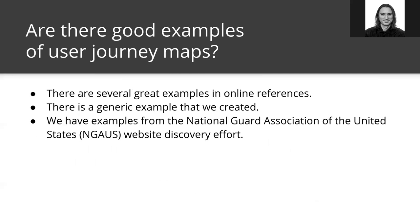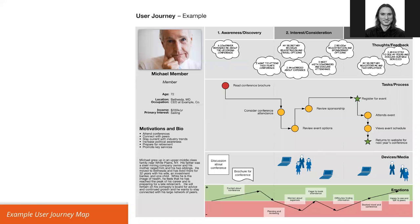There are good examples of user journey maps online. There are several online guides for how these things are constructed. There's a generic example I put together for presentations like this, and the National Guard Association of the United States was kind enough to give us permission to use their information. So here we have Michael Mendler — alliteration, our cute version of a user. He's a member of some sort of organization, 72 years old, CEO of ExampleCorp, based in Bethesda, Maryland, makes $200,000 a year, and his personal interest is sailing.